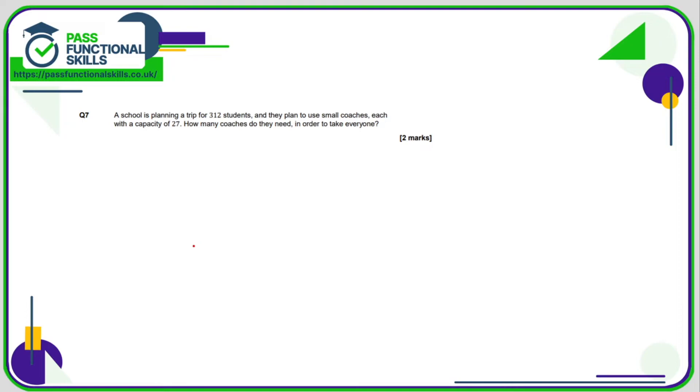Question number 7. We can use a calculator, which is good news. So all we need to do is 312 students divided by 27. 312 divided by 27 comes to 11.5 recurring coaches. We need to think about this. We can't have 11 and a half coaches, so that's going to round up to 12 coaches.